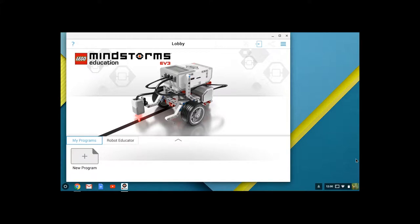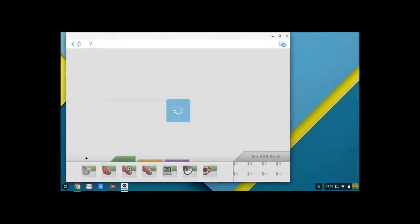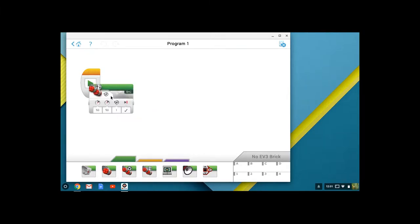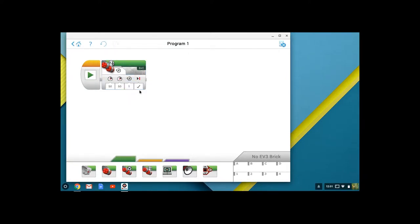With our Mindstorms software booted up, we want to go ahead and create a new program. Now this is going to be a very simple new program. We are simply going to drag Move Tank up and snap it in place. We are going to leave our settings at exactly where they are, 50% power, both left and right going forward, one revolution or rotation, and we want our robot to come to a brake stop at the end. And that's all we're going to do here. So now what I'm going to do, I'm going to pair the brick with my Chromebook and I am going to download the program to run.